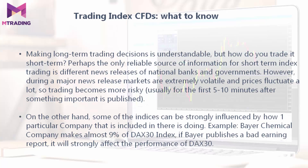Making long-term trading decisions is understandable, but how do you trade it short-term? Perhaps the only reliable source of information for short-term index trading is news releases from national banks and governments. However, during a major news release markets are extremely volatile and prices fluctuate a lot, so trading becomes more risky. On the other hand, some indices can be strongly influenced by how one particular company included in the index is doing. For example, Bayer Chemical Company makes almost 9% of the DAX 30 index — if Bayer publishes a bad earnings report, it will strongly affect the performance of DAX 30.